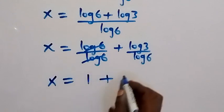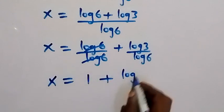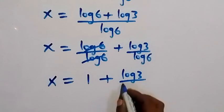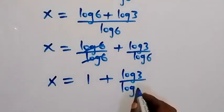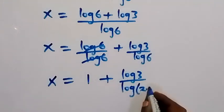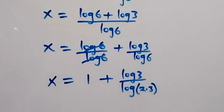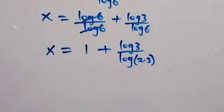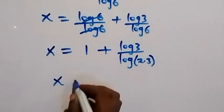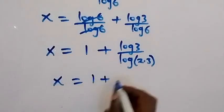Plus we have log 3 divided by, we can write log 6 as log 2 times 3. Then when we separate this into 2 logs as well, this will be x equals to 1 plus log 3 divided by log 2 plus log 3.